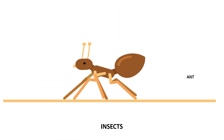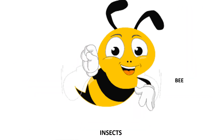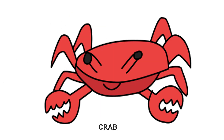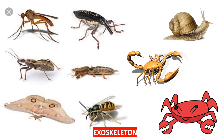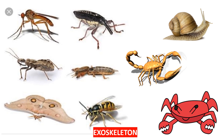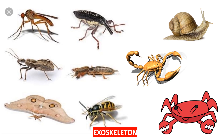Animals like insects, arachnids, and crabs have an exoskeleton. They have a skeleton outside their body. For these animals, the shells on their body act as the skeleton and protect them.